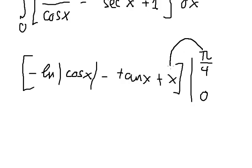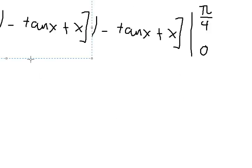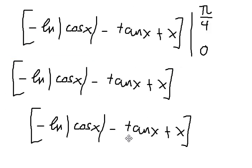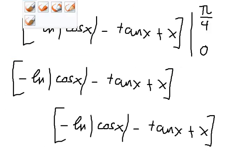We evaluate from 0 to π/4. So we substitute π/4 here and 0 here. We have the negative because this is the bottom term.